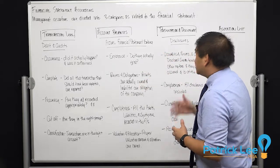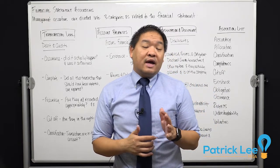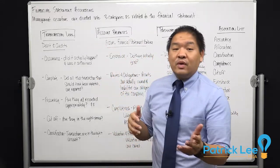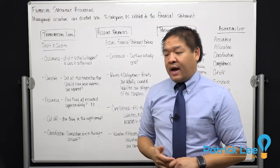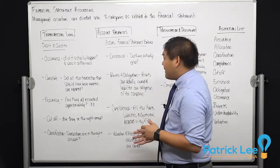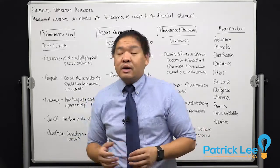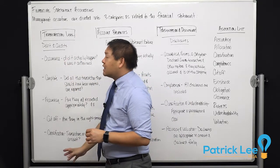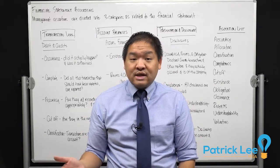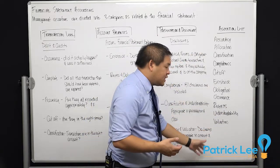Management assertions can be divided into transaction level, account balances, and presentation and disclosures. When we are evaluating something on the financial statement, we categorize it based on these three sections, and that tells us what we're actually testing. For example, if we're looking at a cash balance, that falls under account balances, while looking at large transactions for fraud or errors would fall under the transaction level.